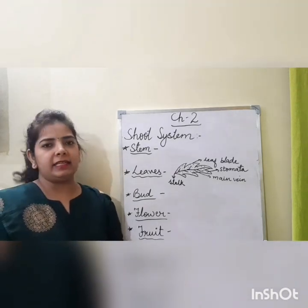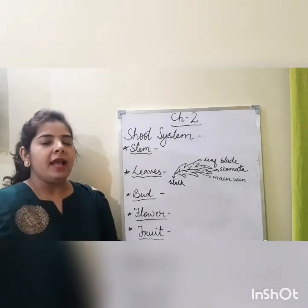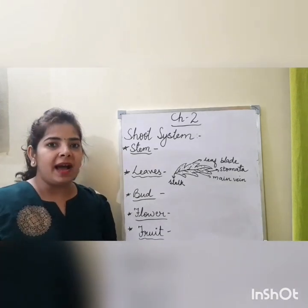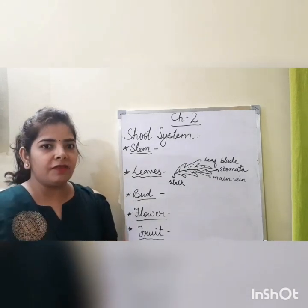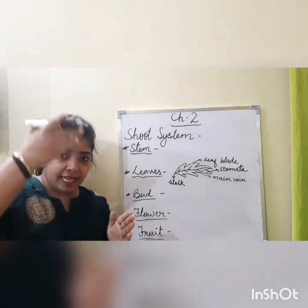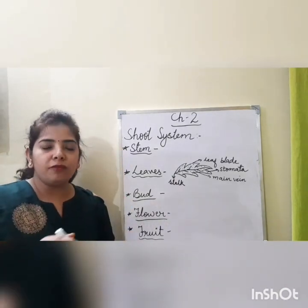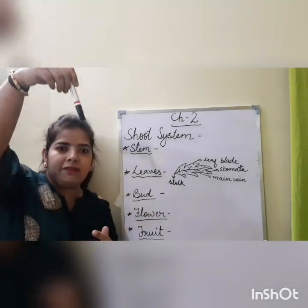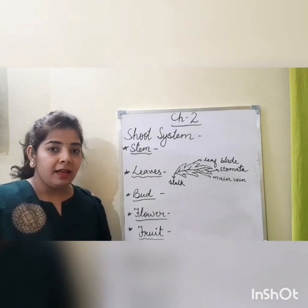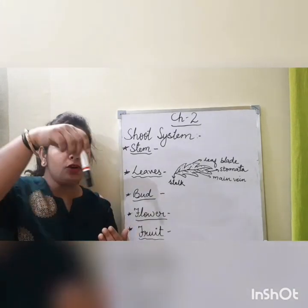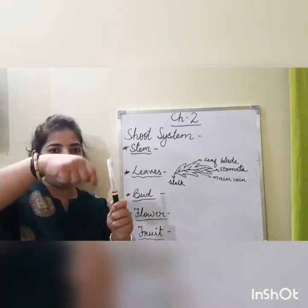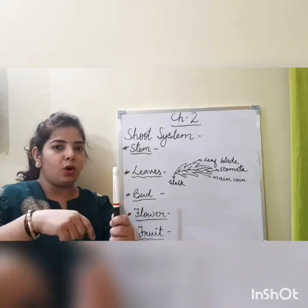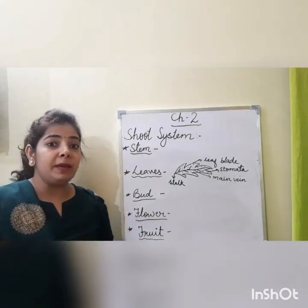Some plants have very delicate stem. For example, money plant cannot grow straight on its own — we need to provide support. It uses tendrils and grows around a support in a circular manner. These kinds of plants are called climbers. They need a support to climb, and we provide that support.